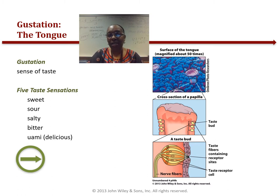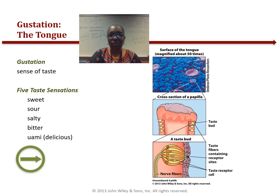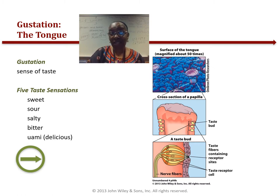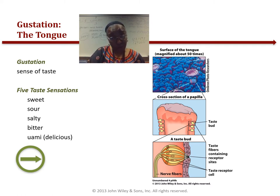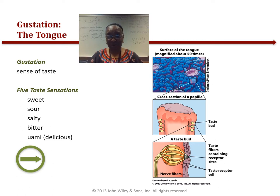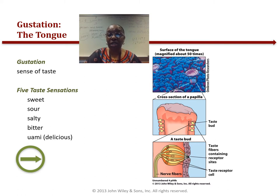Now we're moving toward taste, or gustation. This might be the least critical of our senses, though it's probably contributed to our survival. The major function of taste is generally aided by smell — when you smell fried chicken, it makes you want to eat — but taste also helps us avoid eating or drinking harmful substances. Because many plants that taste bitter contain toxic chemicals, an animal is more likely to survive if it avoids bitter-tasting plants.